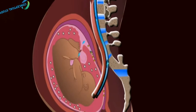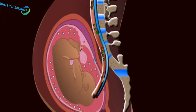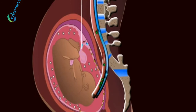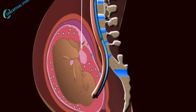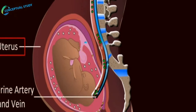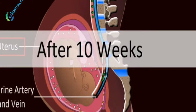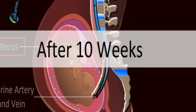For placenta formation, the surface of the blastocyst gives rise to finger-like outgrowths called chorionic villi, which interdigitate into corresponding depressions called crypts in the wall of the uterus. The placenta is fully formed in ten weeks and lasts throughout pregnancy.